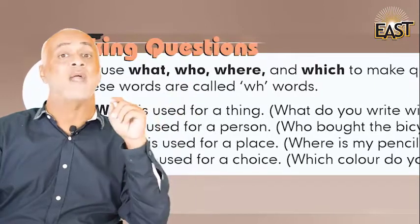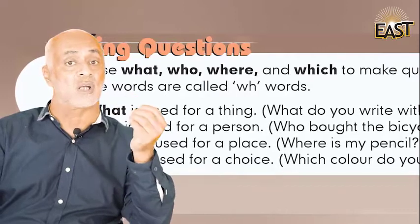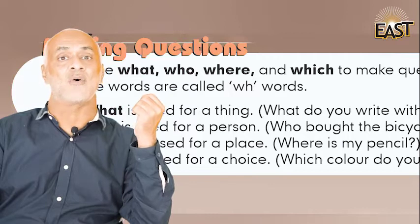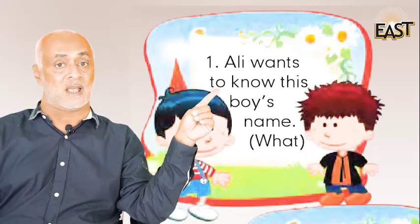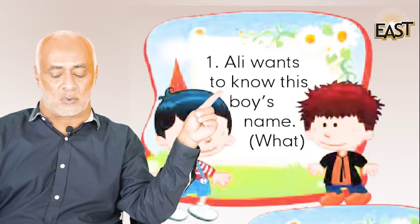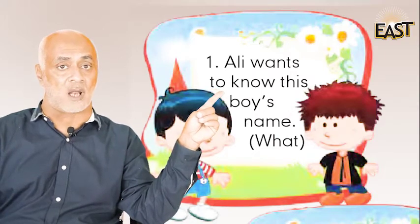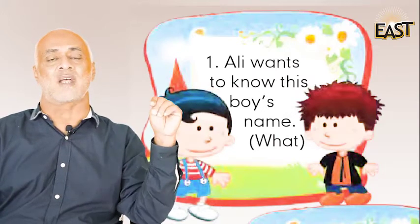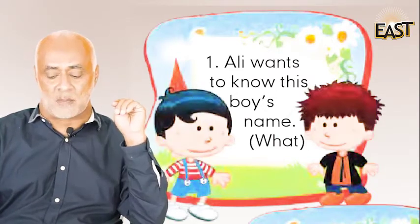Where and which — yeh four words hote hain jin ko use kar ke aap question banate hain. This is how you make questions. Yeh dekhiye, yeh ek activity hai. Ali wants to know this boy's name. Ali chahta hai ek larke ka naam janna, to woh kya kahega? What — very good! 'What is your name?' Yeh ab aap apni copy mein likhein.